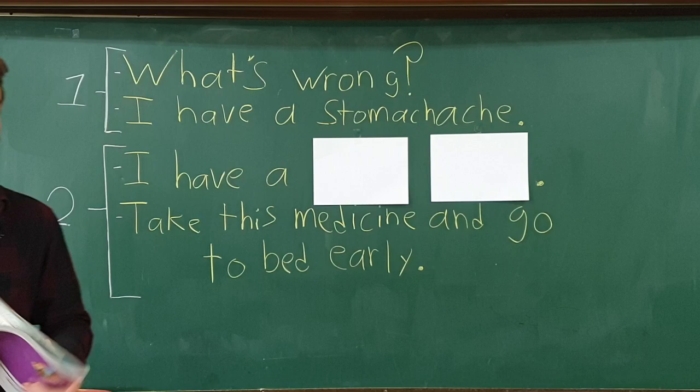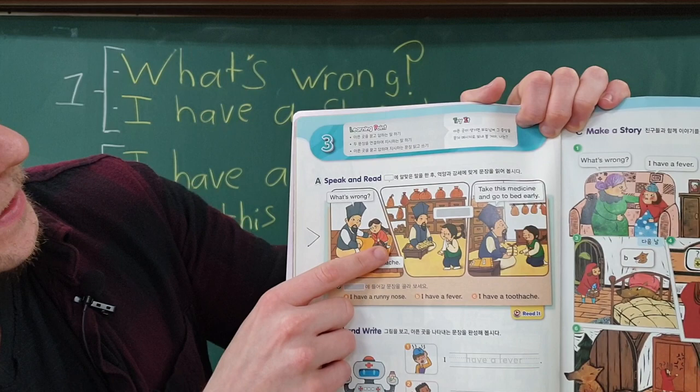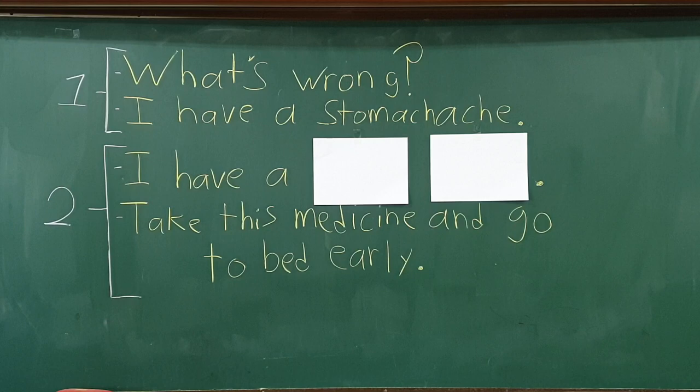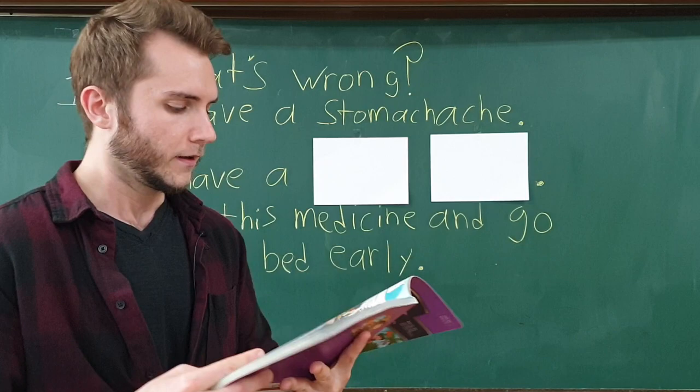So here in the first scene we have the doctor and this girl. He asks her, 'What's wrong?' — that's your key expression for asking. And she says, 'I have a stomachache.' So that's the example.